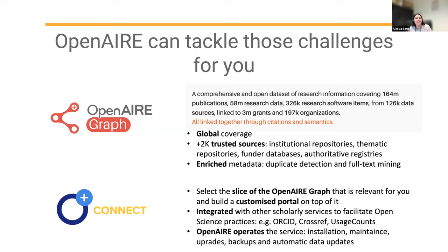So how can this be useful for a research community or a university alliance? We need to identify from the graph the slice that is relevant for the alliance or research community. Once we identify that relevant slice, we can build a customized portal on top of it. This is exactly what OpenAIRE Connect does. In addition to the portal, you can consider Connect as a facilitator of open science practices, integrated with scholarly communication services like ORCID, Crossref, and Usage Counts, as well as other OpenAIRE services like Zenodo and Explorer.